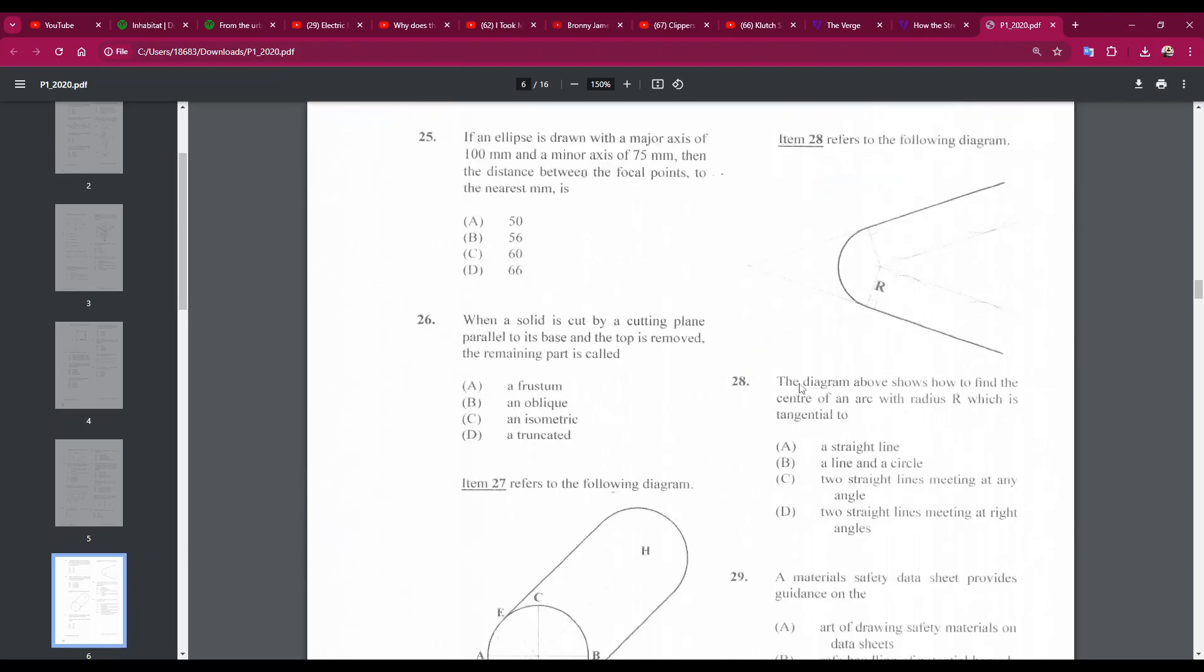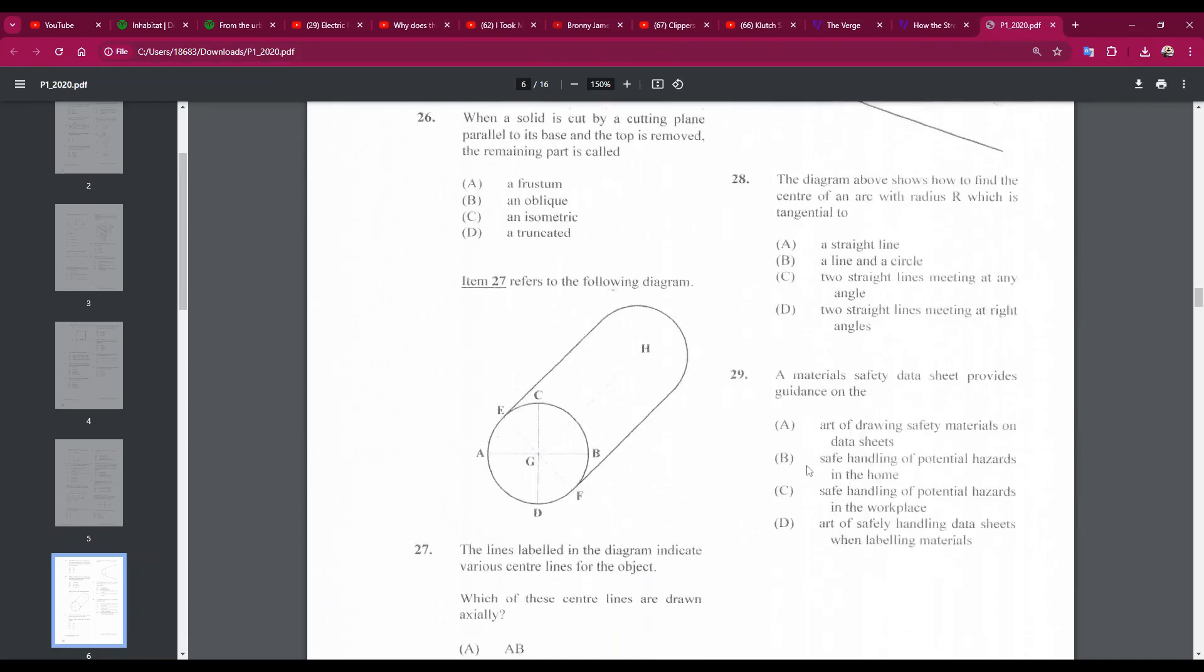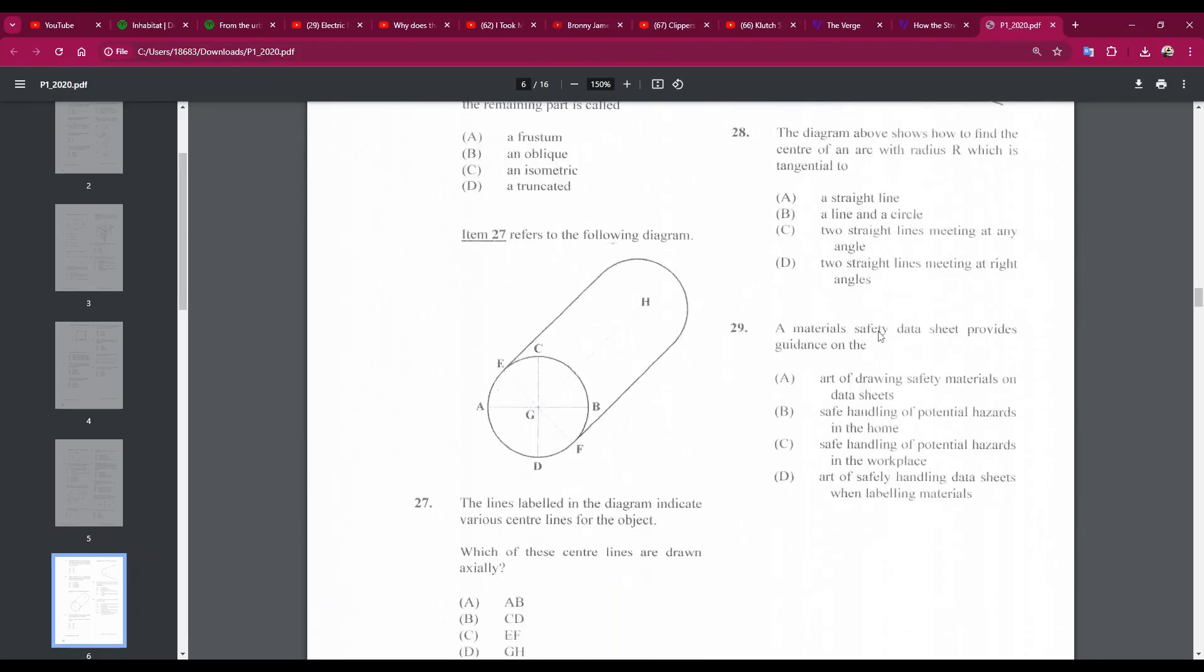Number 28: the diagram above shows how to find the center of an arc with radius R, which is tangential to two straight lines meeting at any angle. So the answer is C. Number 29: a material safety data sheet provides guidance on safe handling of potential hazards in the workplace. The answer is C.